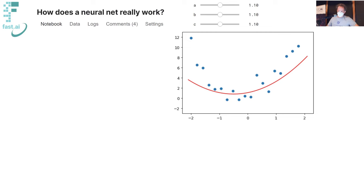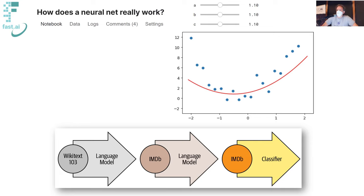The idea of fine-tuning a pre-trained NLP model in this way was pioneered by an algorithm called ULMFiT, which was first presented in a FastAI course — I think the very first FastAI course. It was later turned into an academic paper by me in conjunction with a then-PhD student named Sebastian Ruder, who's now one of the world's top NLP researchers, and went on to help inspire a huge step improvement in NLP capabilities around the world.